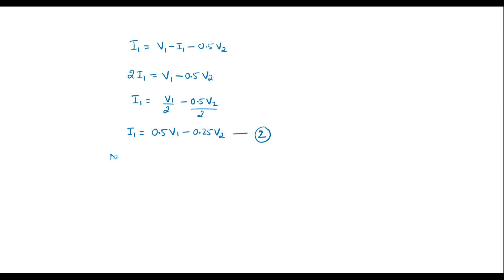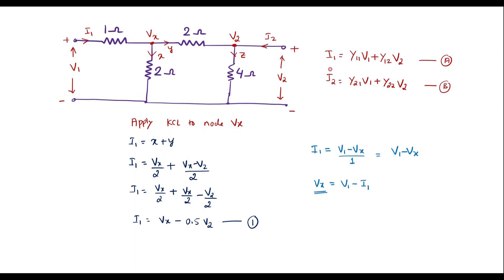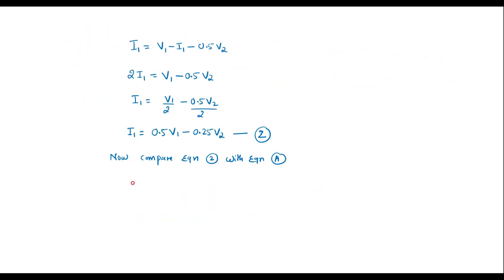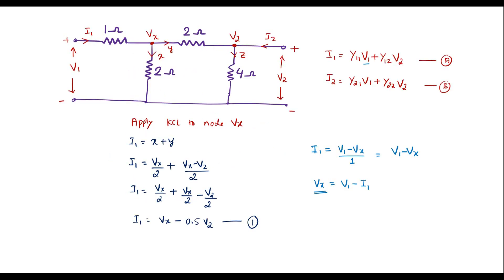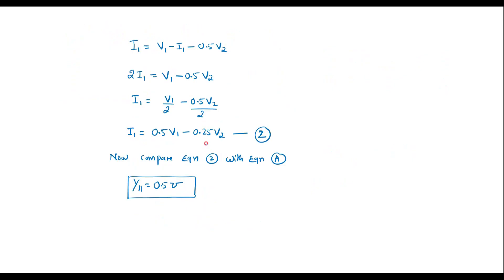Now let me compare equation 2 with equation a. In equation a, the coefficient of v1 is y11, and here that coefficient is 0.5, so y11 = 0.5 mho. The coefficient of v2 is y12, and here that coefficient is -0.25, so y12 = -0.25 mho. Thus we have found two parameters.